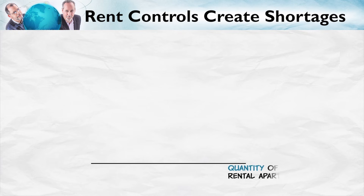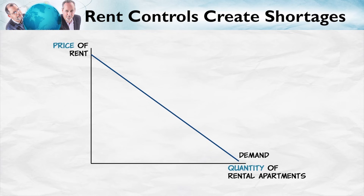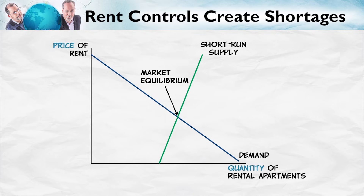Rent controls create shortages. On the diagram, the horizontal axis has the quantity of rental apartments, the vertical axis has price. Here's our demand and here's our supply. The main thing to note is that the supply of apartments in the short run is going to be very inelastic, because in the short run the apartments are simply there — they're already built, and there's not much you can do to change the supply of apartments.